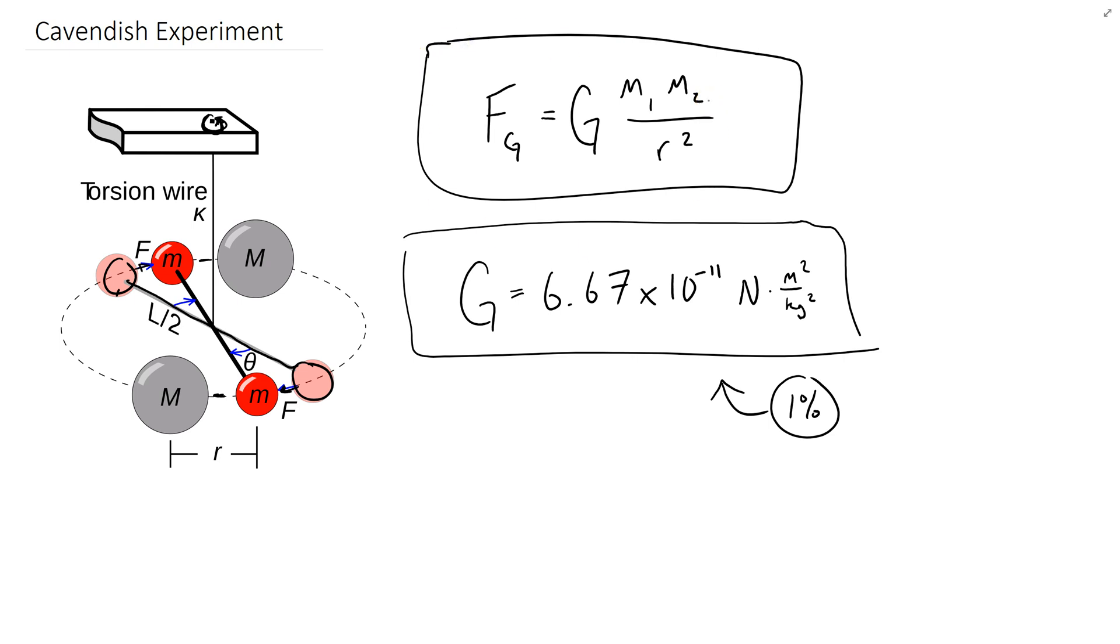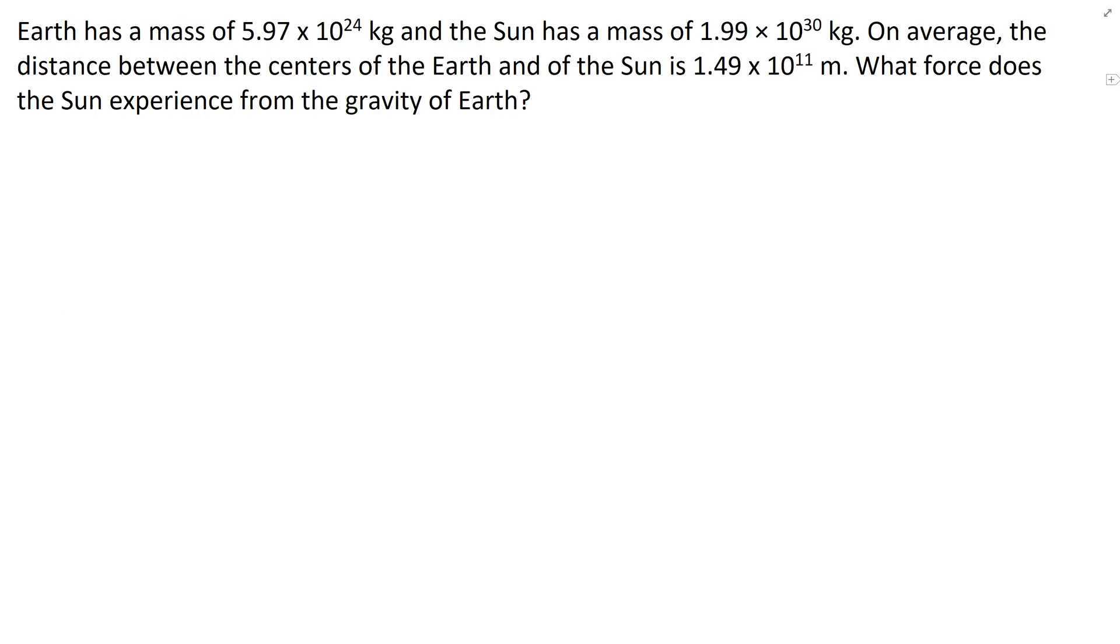And this is the equation that we use to figure out, say, the attraction of the Sun and the Earth to each other. So let's take a look at that. The Earth has a mass of 5.97 times 10 to the 24th kilograms. The Sun has a mass of 1.99 times 10 to the 30th kilograms. On average, the distance between their centers is 1.49 times 10 to the 11th. Let's find the force that the Sun experiences with gravity. So let's redraw our picture. Here we have the Sun, and here's the Earth. And we know that the force of gravity is a shared interaction between the two. And the distance between their centers, R, is 1.49 times 10 to the 11th meters.